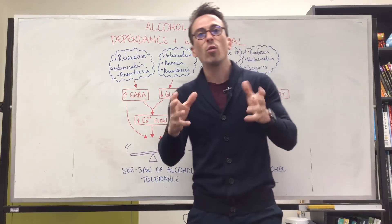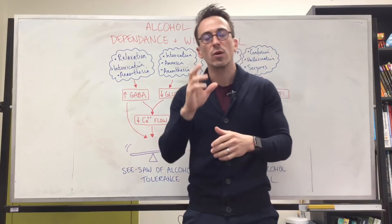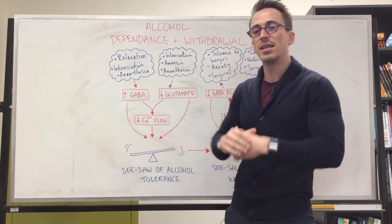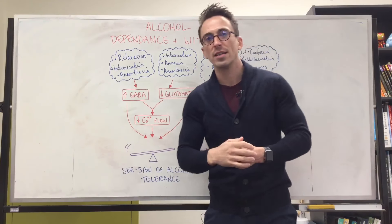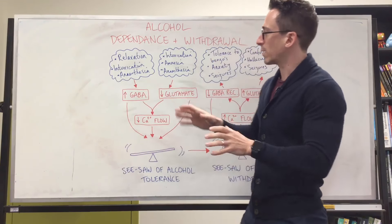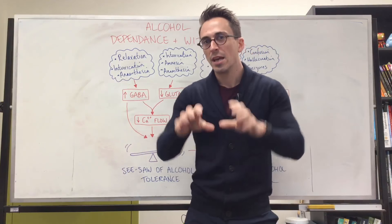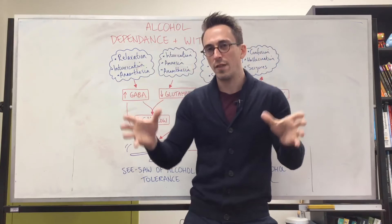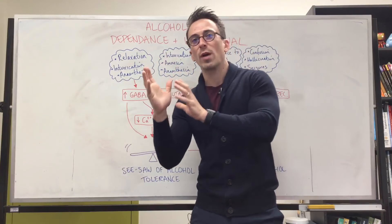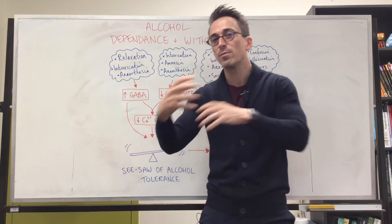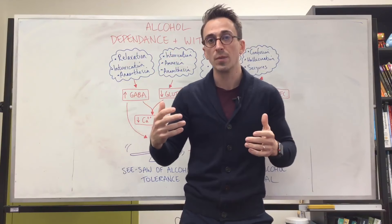Now we know that in acute phases — short-term drinking of alcohol — we feel relaxed, intoxicated, and can have that anesthetic effect. And depending on how much you drink, you may get a little bit of amnesia. All of these effects are due to the way that alcohol plays around with neurotransmitters and their various pathways within the brain or central nervous system.